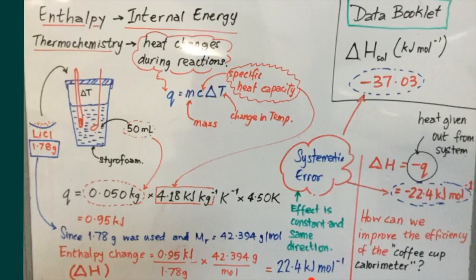But before we complete these calculations, it is of utmost importance to determine the sign for this enthalpy change. And in this particular reaction, the change in temperature was positive, which means that heat was given out from the system. And because the system loses heat, enthalpy change must be negative, meaning that we must put a negative sign in front of this value for 22.4 kilojoules. So the value should be negative 22.4 kilojoules to match with the stated data booklet value of negative 37.03 kilojoules per mole for the heat of solution for lithium chloride.